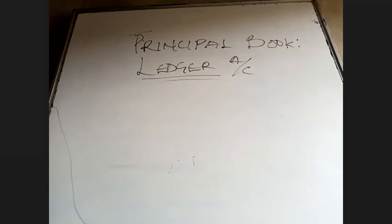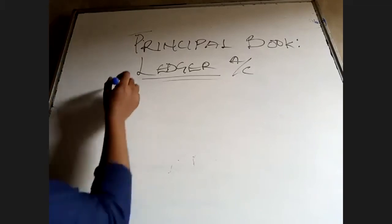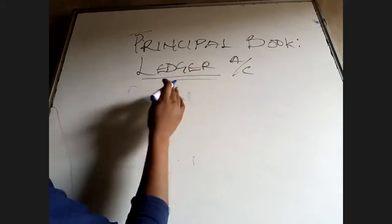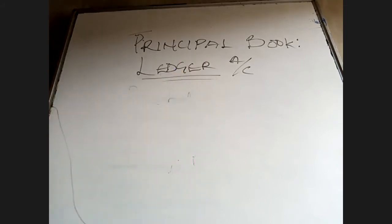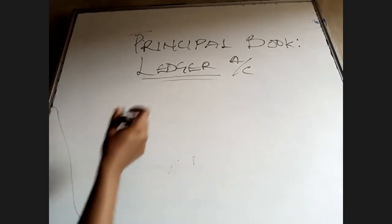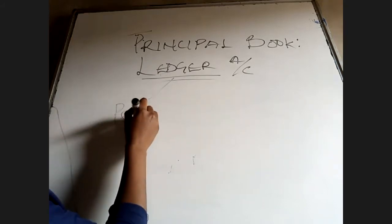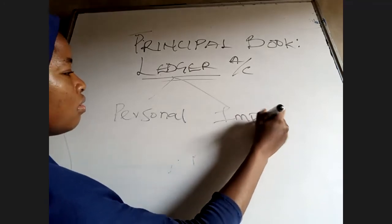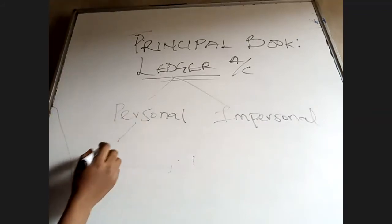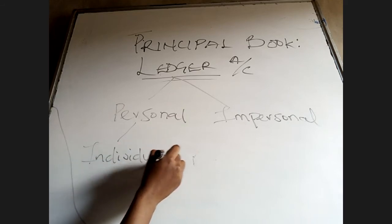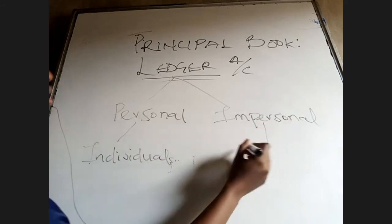We have our ledger account divided into two major parts. We have the personal and the impersonal. Your personal account deals basically with individuals, while the impersonal deals with non-individuals.